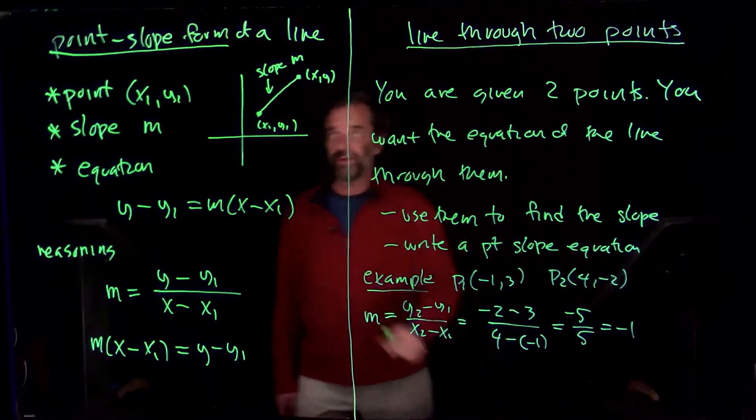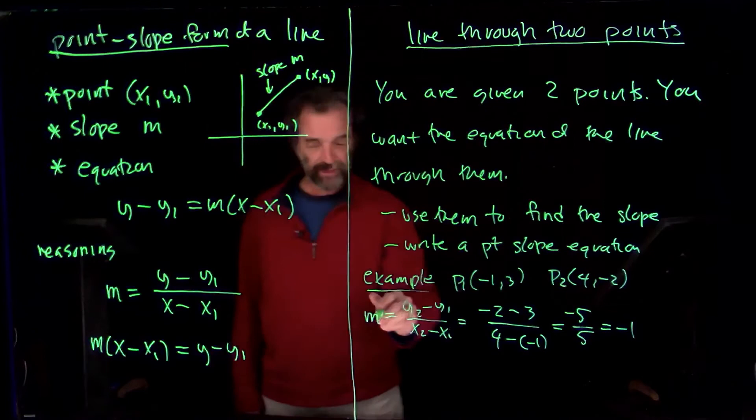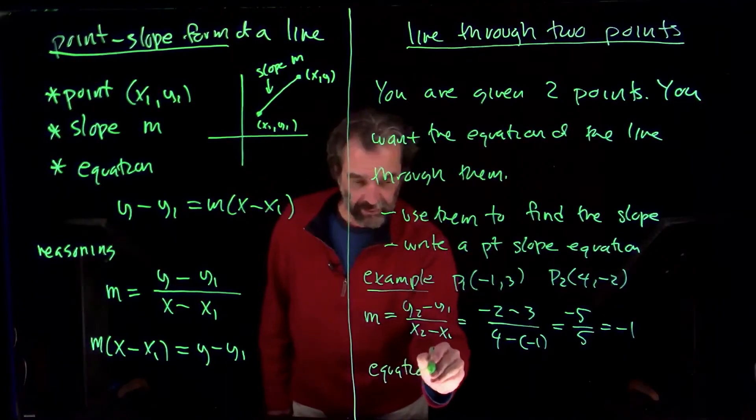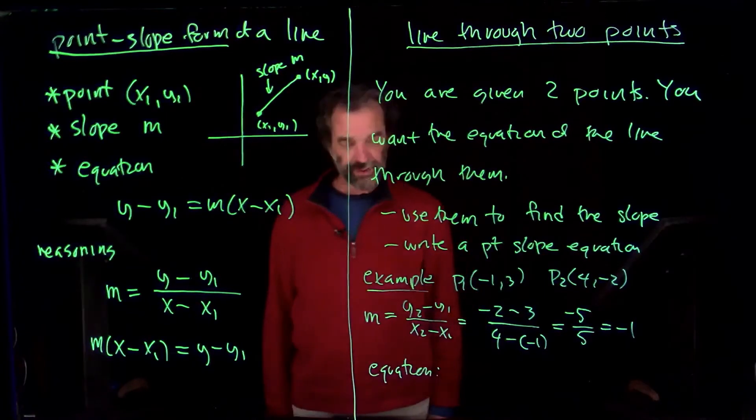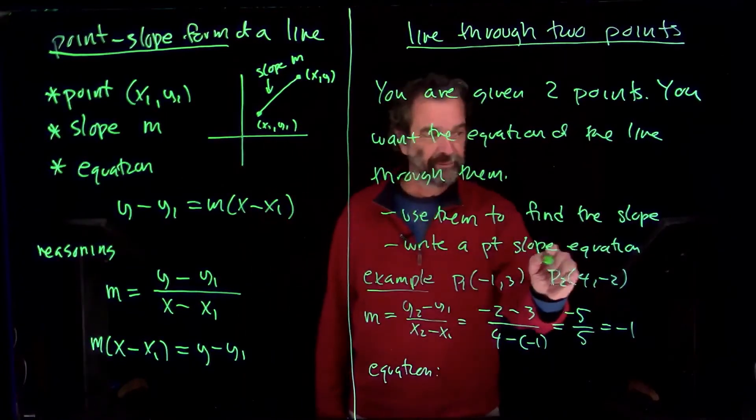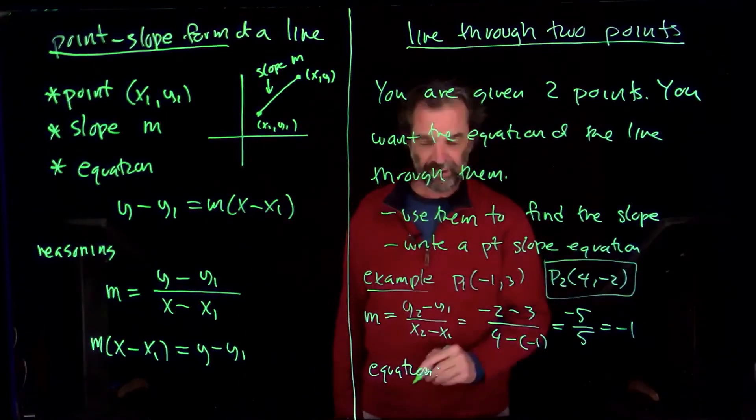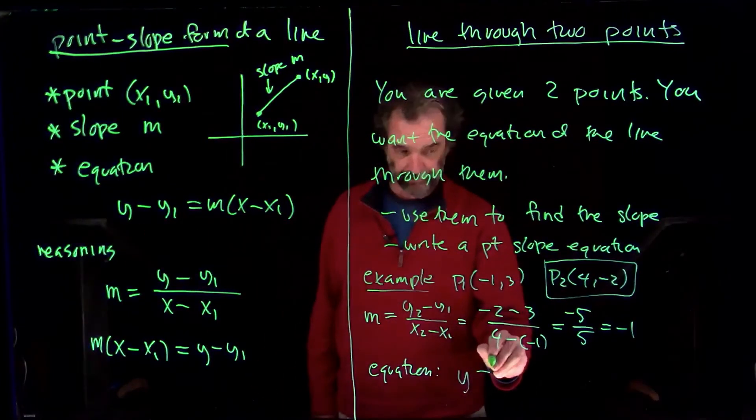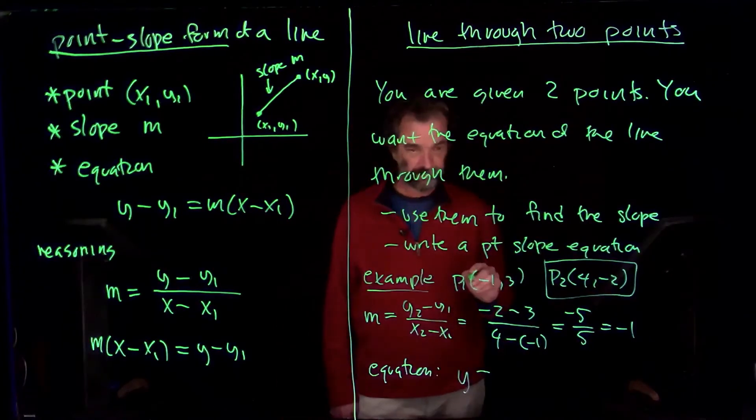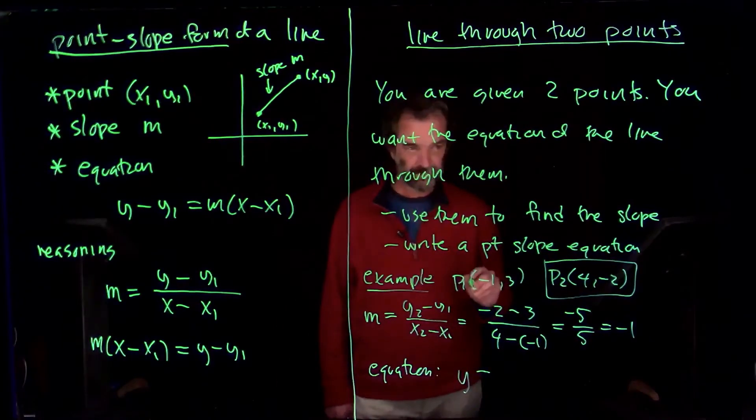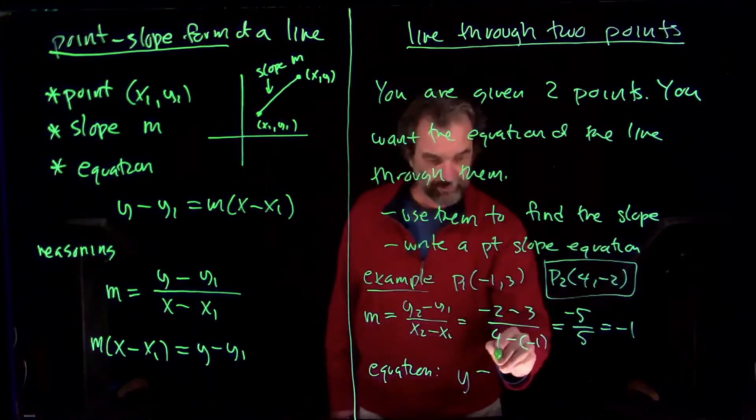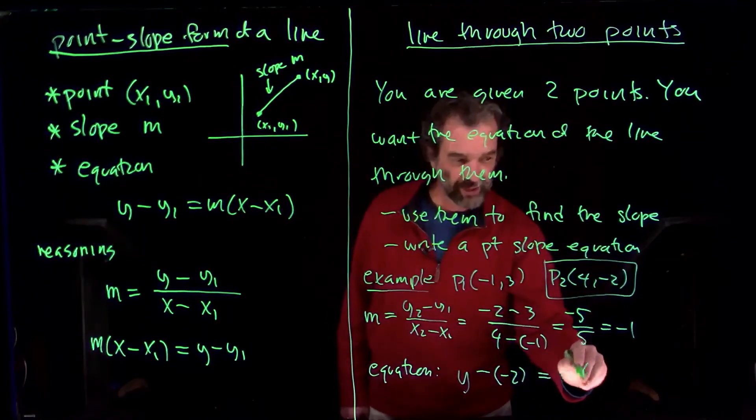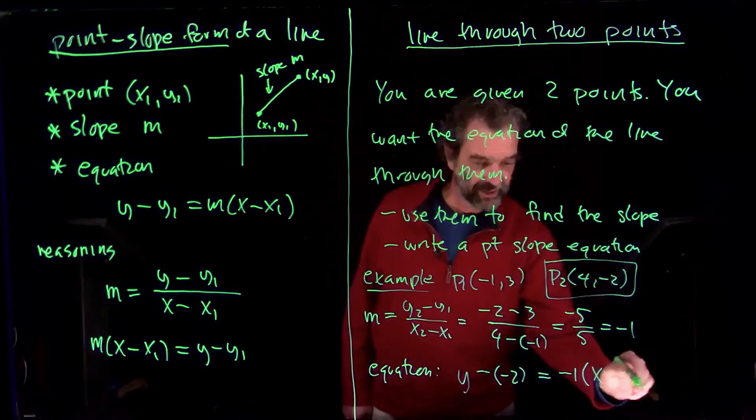And then we'll go over here. We'll just use the point-slope form, m equals -1, and write down the equation. Pick any points you want. I'm just going to pick this point. But you could pick the first point if you wanted to. It's y minus the y, minus -2. It's the slope -1, times x minus the x, like that.